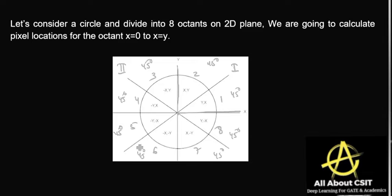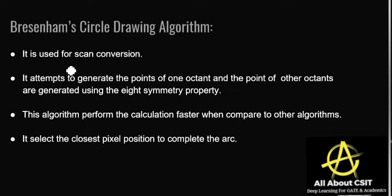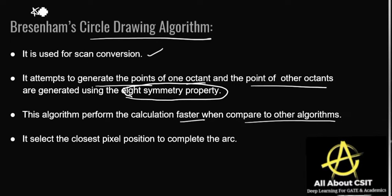There are 4 quadrants, each quadrant having 2 octants — each quadrant is 90 degrees and each octant is 45 degrees, so 2 × 45 = 90. The Bresenham circle drawing algorithm is used for scan conversion. It generates the points of one octant and the points of other octants are generated using the 8-symmetry property. This algorithm performs calculations faster compared to other algorithms, and it selects the closest pixel position to complete the arc.